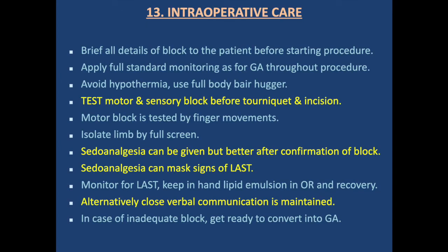Intraoperative care: we brief all details of the block to the patient before starting the procedure. We apply full standard monitoring throughout the procedure. We avoid hypothermia using full body bear huggers. We test motor and sensory block before tourniquet and before incision — motor block is tested by finger movement. We isolate the limb with a full screen. Sedoanalgesia can be given after confirmation of the block, but note it can mask signs of local anesthetic systemic toxicity. We monitor for local anesthetic systemic toxicity, keeping lipid emulsion in OR and recovery. Closed verbal communication is maintained with the patient throughout the procedure. In case of inadequate block, be ready to convert to general anesthesia.